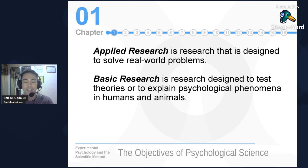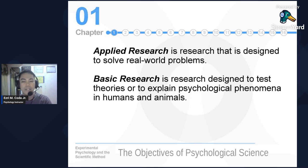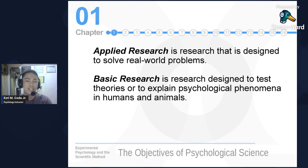There are two types of research in psychological research: applied research and basic research. Applied research is designed to solve real-world problems — you identify a problem, conduct research, provide recommendations or intervention programs, and apply them. Basic research is designed to explain psychological phenomena in humans and animals. It is used purely when we want to prove or disprove a theory, replicate a study, or explain an already existing psychological phenomenon in the natural world.